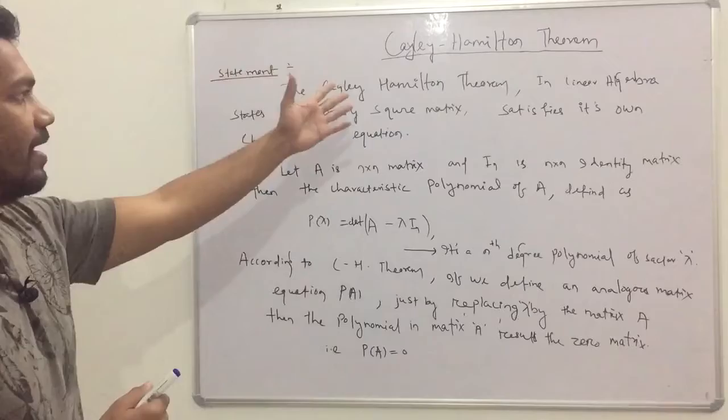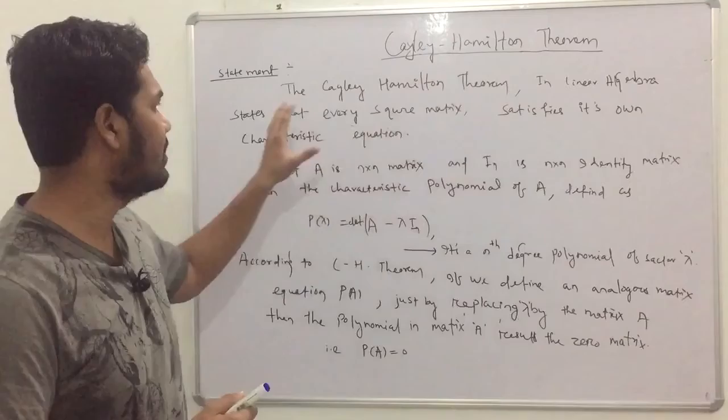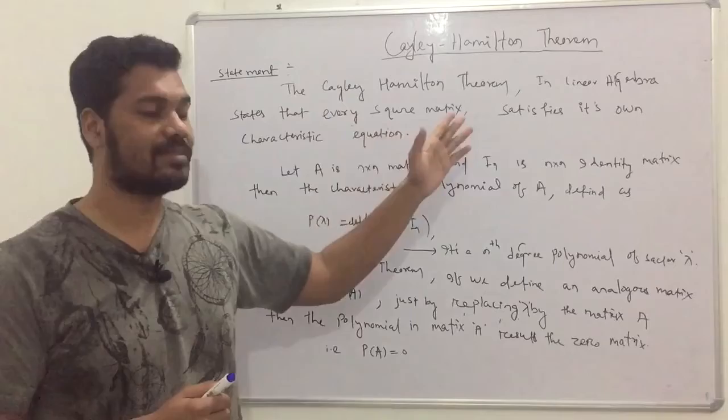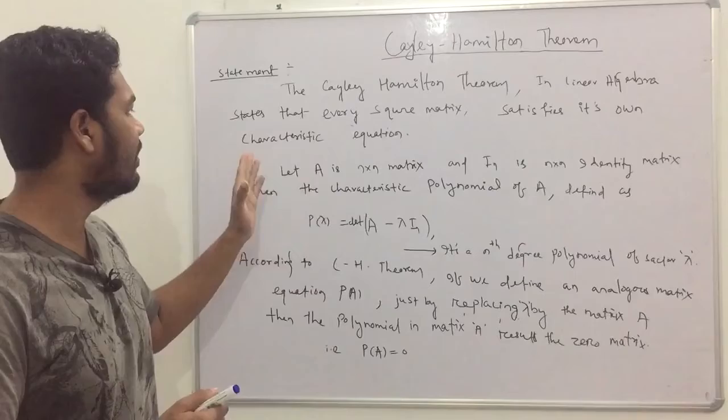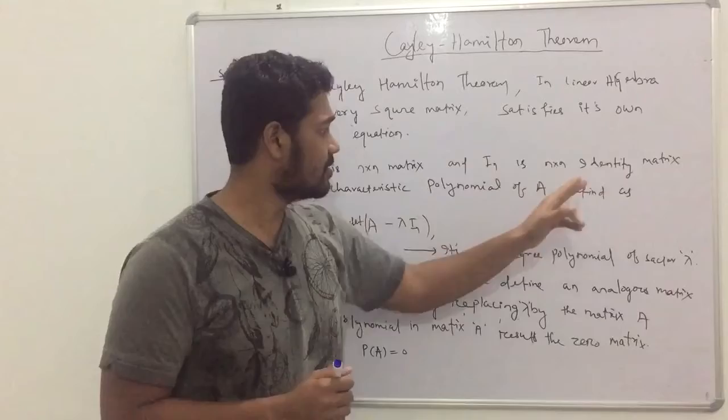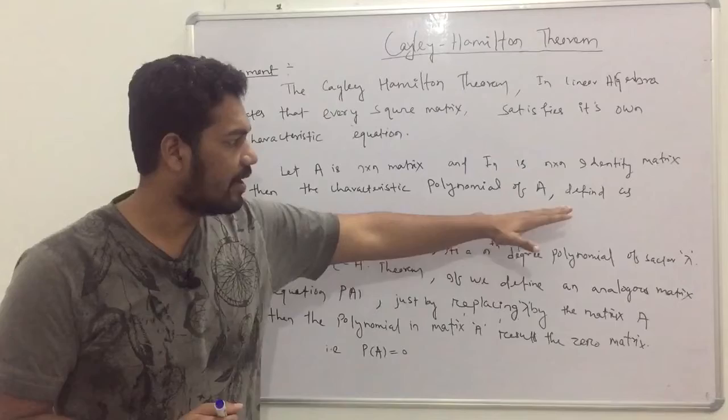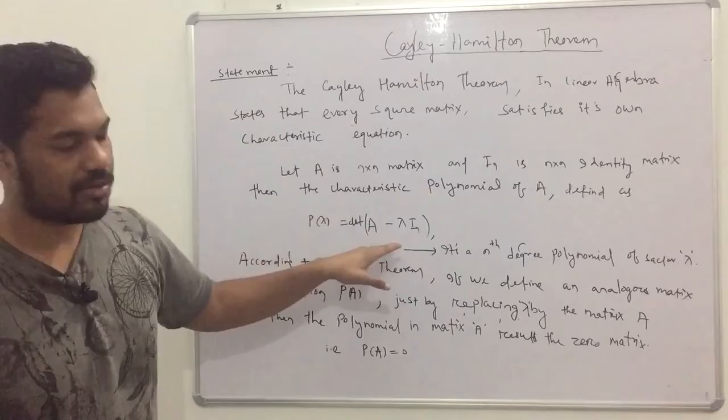So what is the statement of the Cayley-Hamilton theorem? The Cayley-Hamilton theorem in linear algebra basically states that every square matrix satisfies its own characteristic equation. So how to find the characteristic equation? Let A be an n×n matrix and Iₙ be the n×n identity matrix. Then the characteristic polynomial of A is defined as P(λ) = determinant of (A − λIₙ).